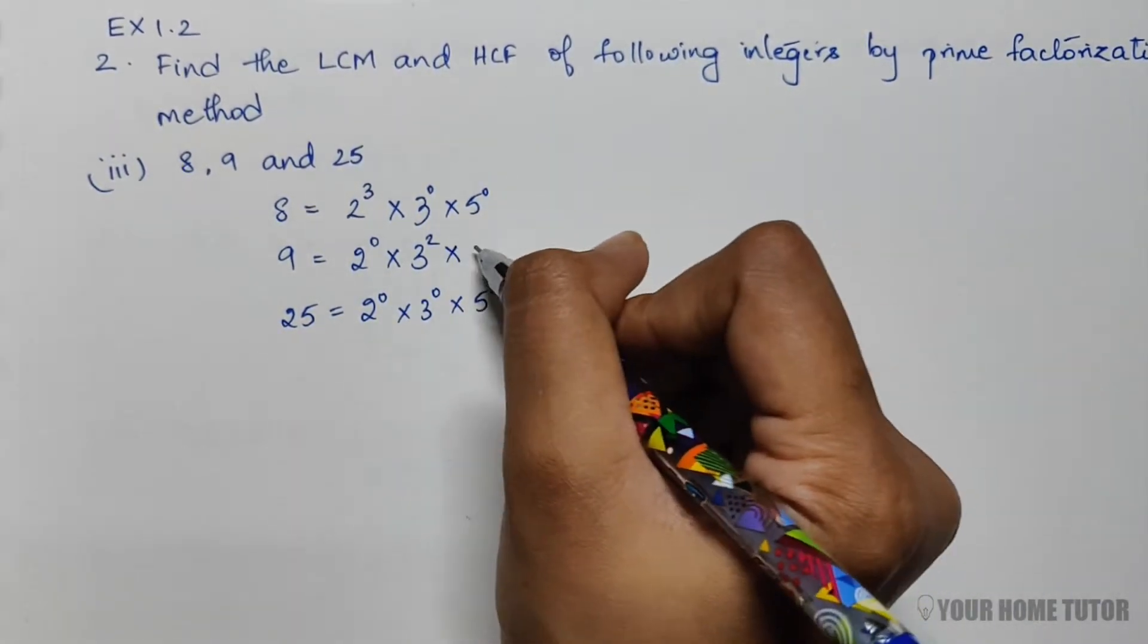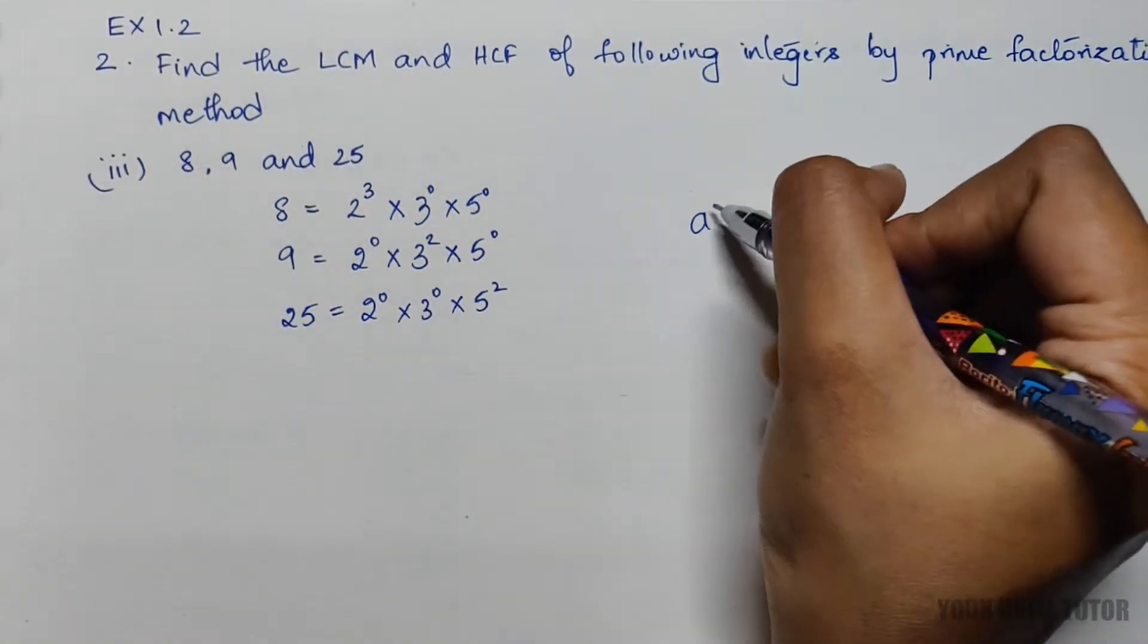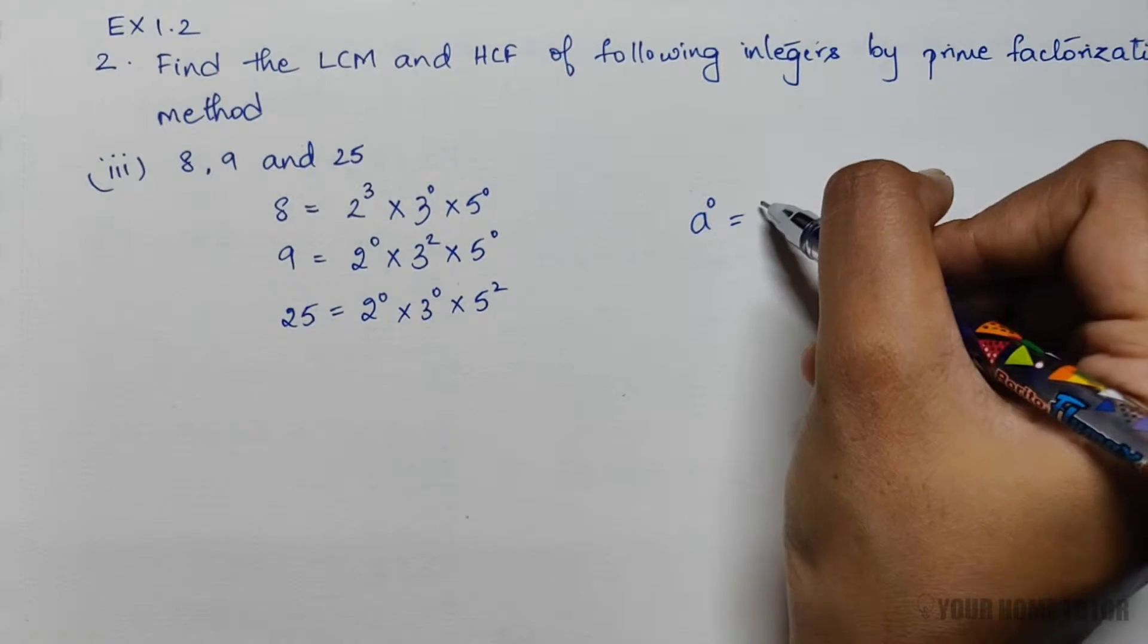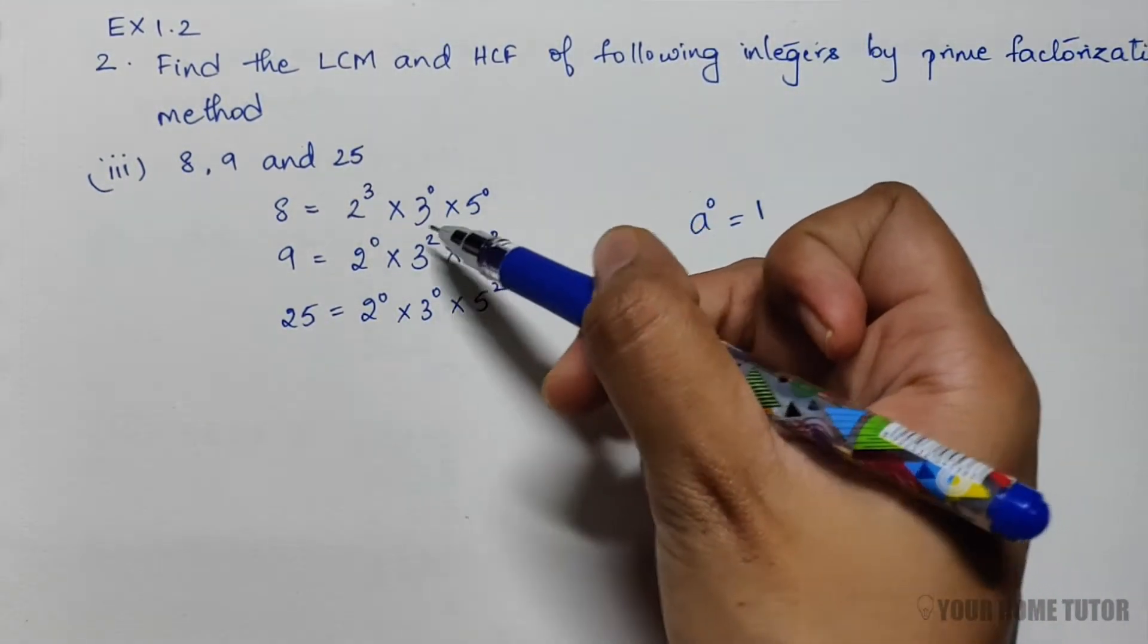We know that any number to the power of 0 is equal to 1, so the zero power terms we've written are equivalent to 1.